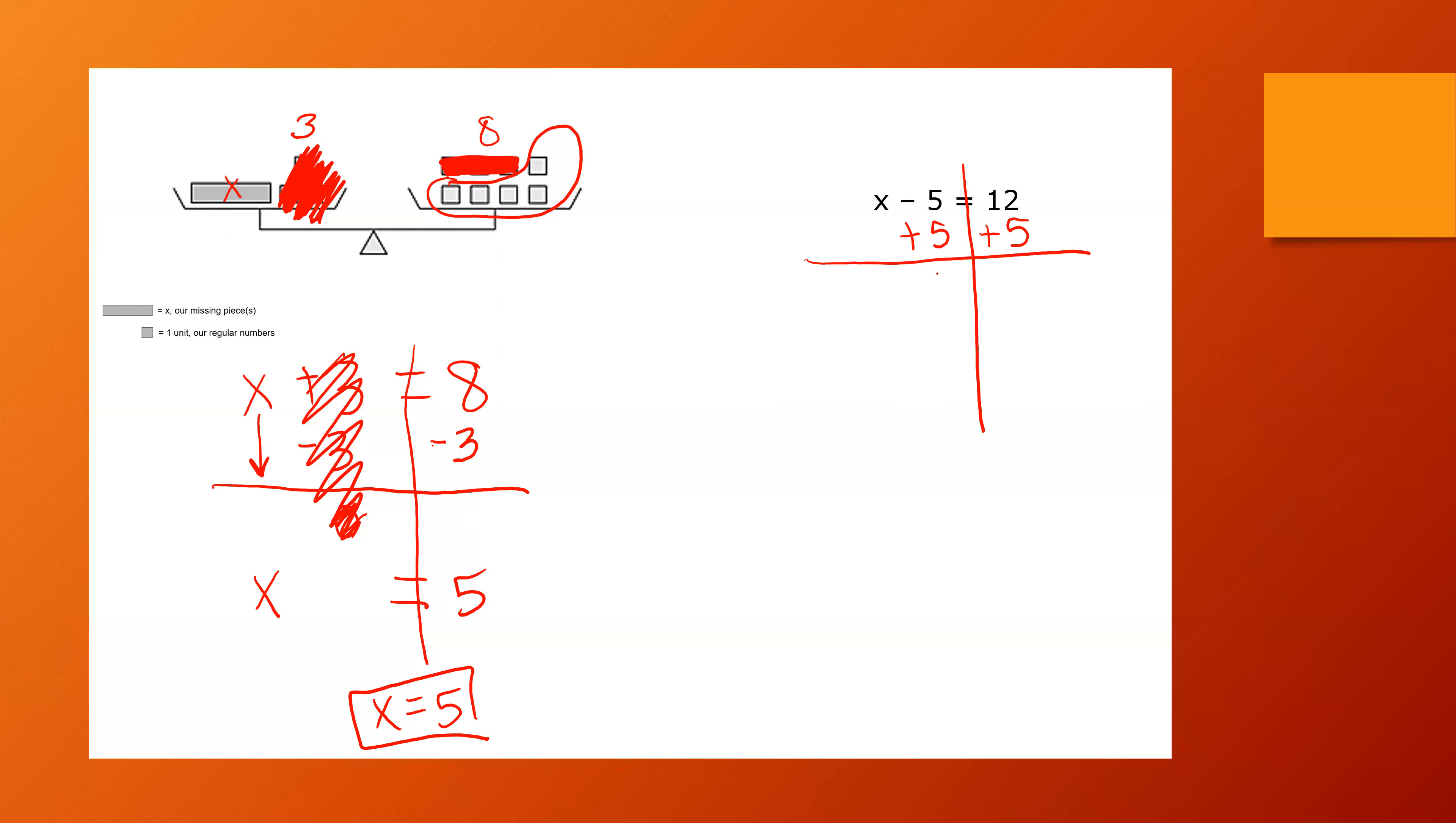And we normally don't write that zero. So that is what we say it cancels. You might hear some teachers say that. My X, however, is still here, so I still need to write it. My equal sign is there. And then what is 12 plus five? 17. So my solution, if this were in a model, is that my one long skinny rectangle would be worth 17 of those little units, but this is the work that I really need to see.